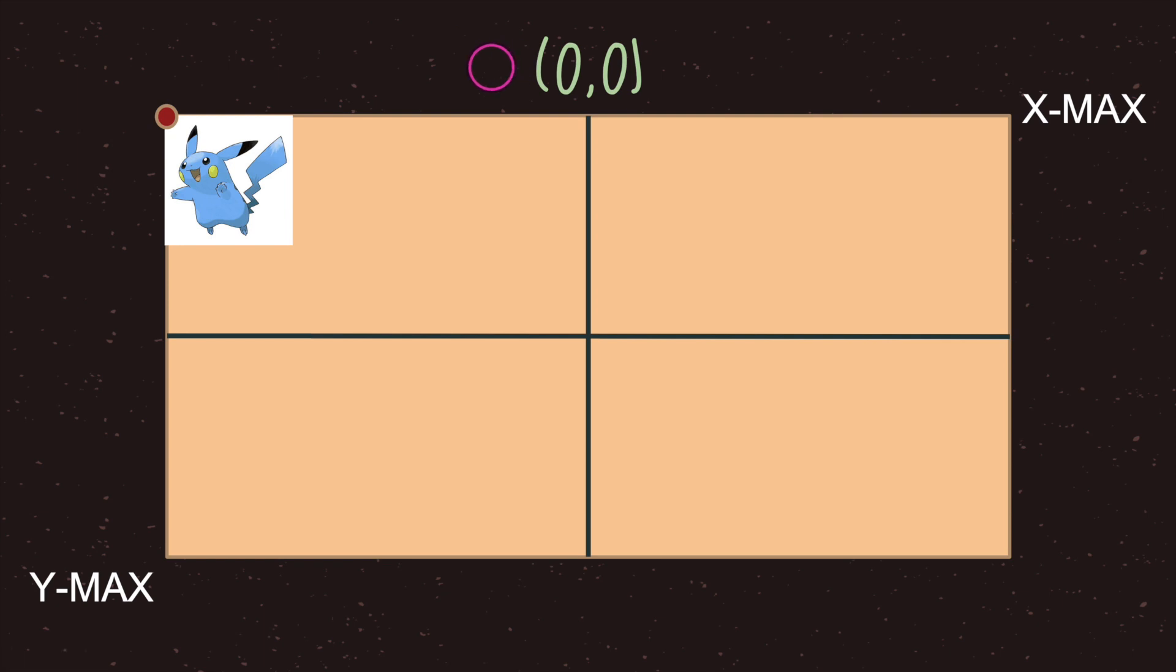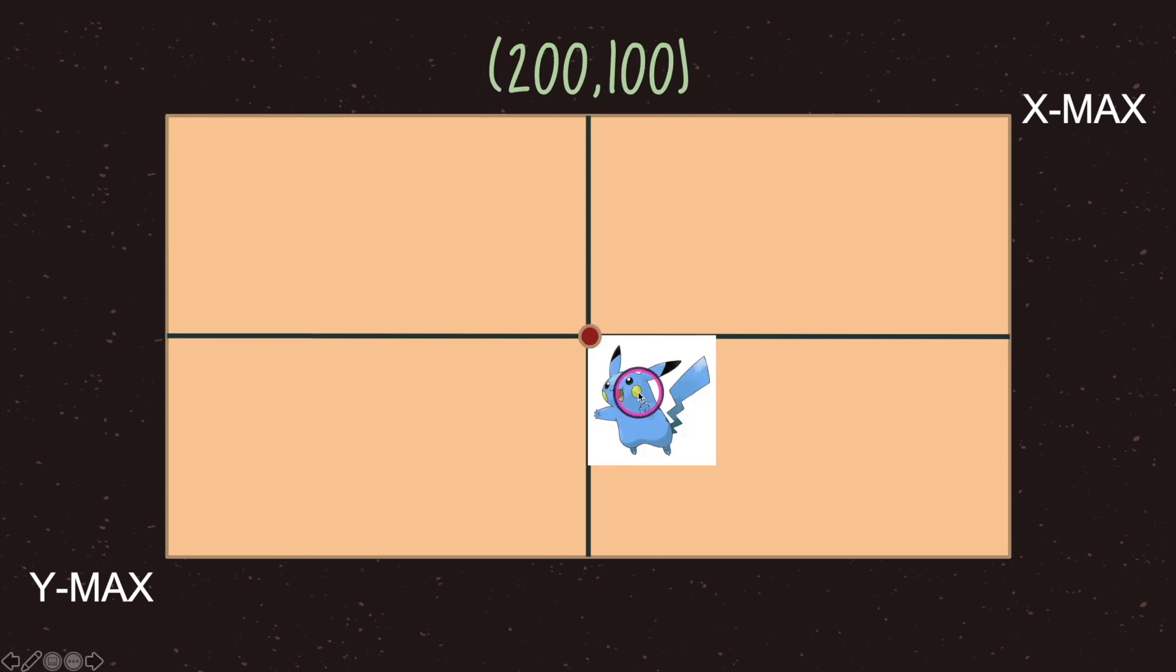And if we decide to move our offset value again, which is our reference point that controls our game object, notice how our game object moves with the offset point and still retains its position in relation to our offset value. In this case our offset value is now two hundred and one hundred. This value is not an accurate depiction of where it is but I wanted to keep the values straightforward.